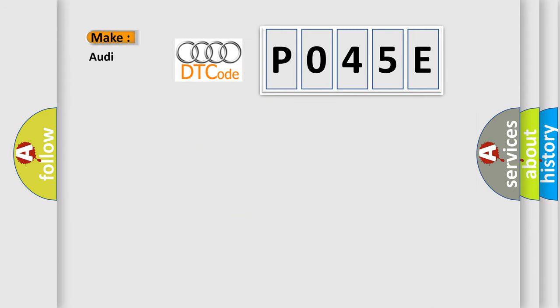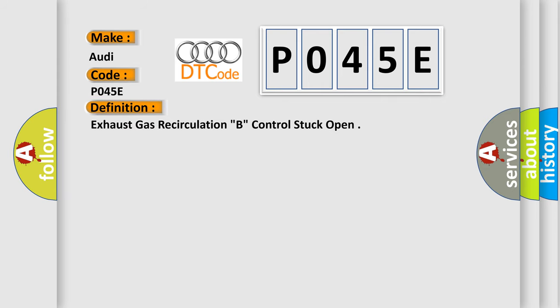So what does the diagnostic trouble code P045E interpret specifically for Audi car manufacturers? The basic definition is Exhaust Gas Recirculation B Control Stuck Open.